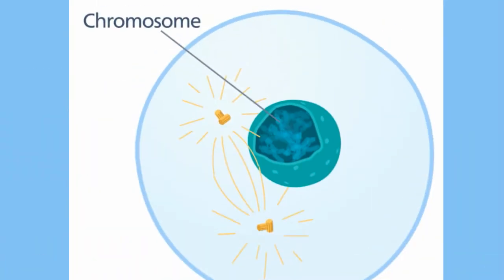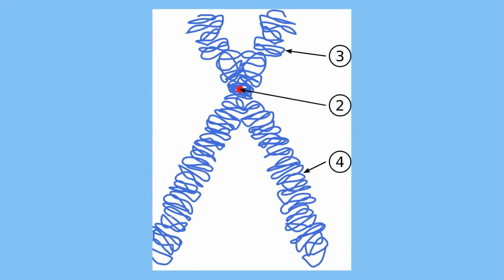During prophase the chromatid condenses into an X shaped chromosome. Each half of this X is a sister chromatid and are identical copies of the DNA. The two sides of this X chromosome are attached at the centromere.